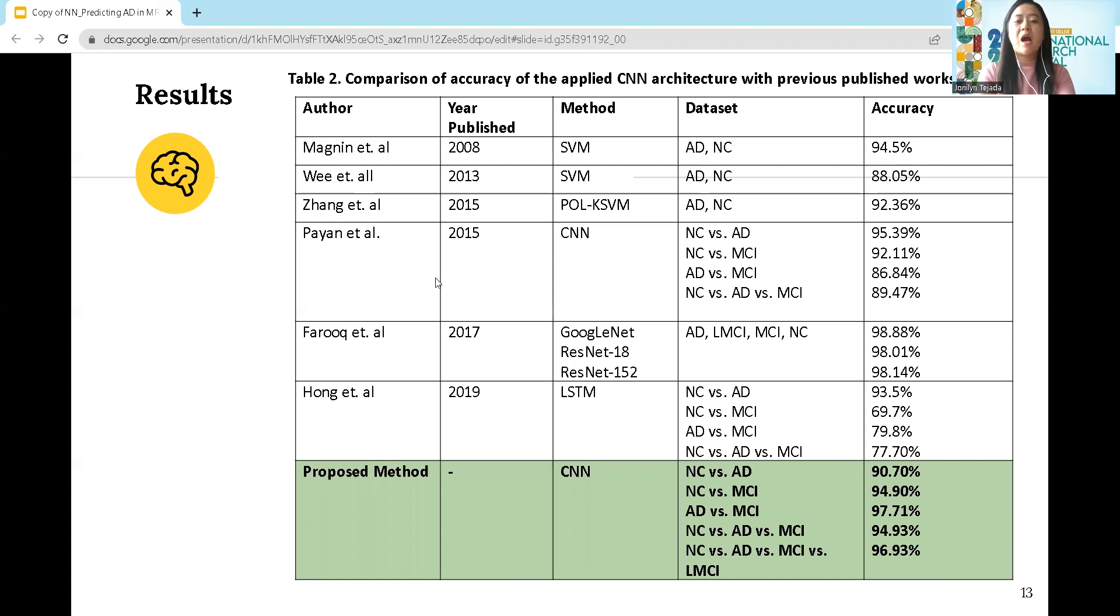Payan et al., published in 2015, used CNN with three-way classification, and their result was quite good, achieving 89.47%.